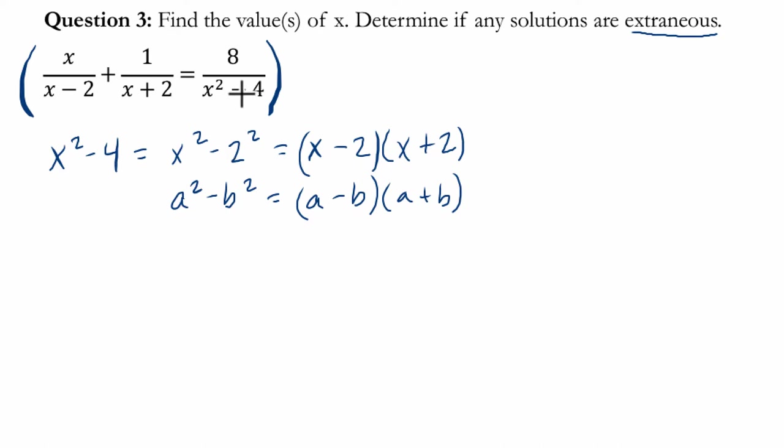So here, why is that nice? Because we have x minus 2 in our first denominator and x plus 2 in our second. And if we multiply them together, we do get our third denominator. So in other words, I don't need to multiply to get a common denominator. I could just multiply everything by x squared minus 4, which is really x minus 2 times x plus 2.